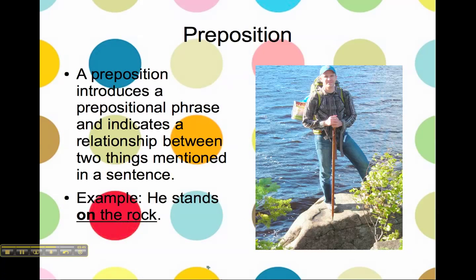And then we have a preposition. A preposition introduces a prepositional phrase and indicates a relationship between two things mentioned in a sentence. In this example, I have my friend Matt, and he stands on the rock. He and the rock are the two things that have a relationship. 'On' is the preposition, and 'on the rock' is the prepositional phrase.